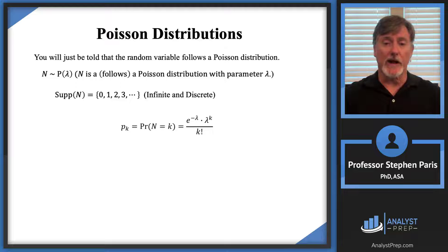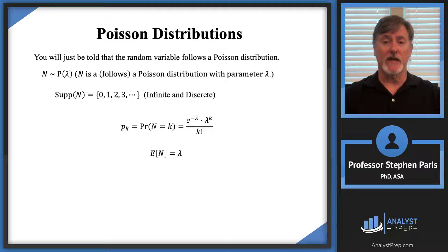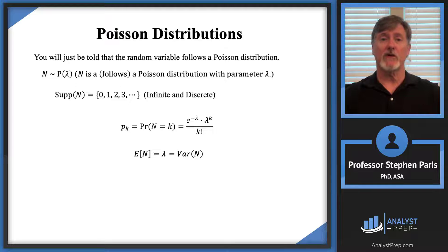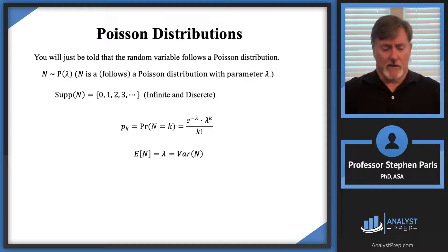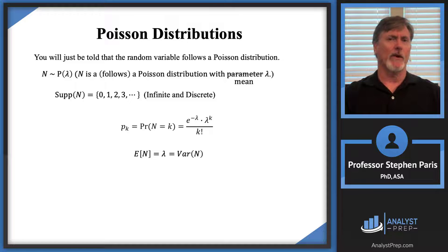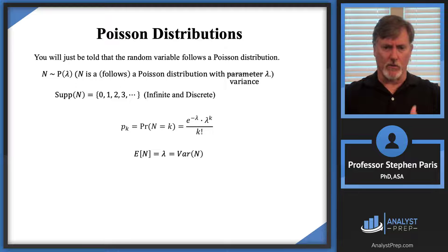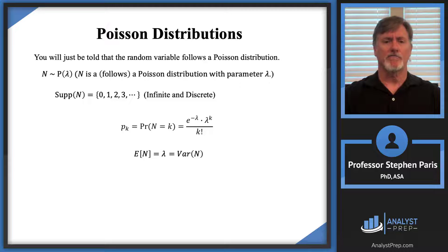The expected value and variance are actually easy to remember. The expected value equals the parameter lambda, and the variance also equals lambda. So for a Poisson distribution, the expected value and variance are both equal to that parameter lambda. You might be told you have a Poisson distribution with a mean of lambda, or in a rare instance, a variance of lambda — they're all equal: the mean, the variance, and the parameter.